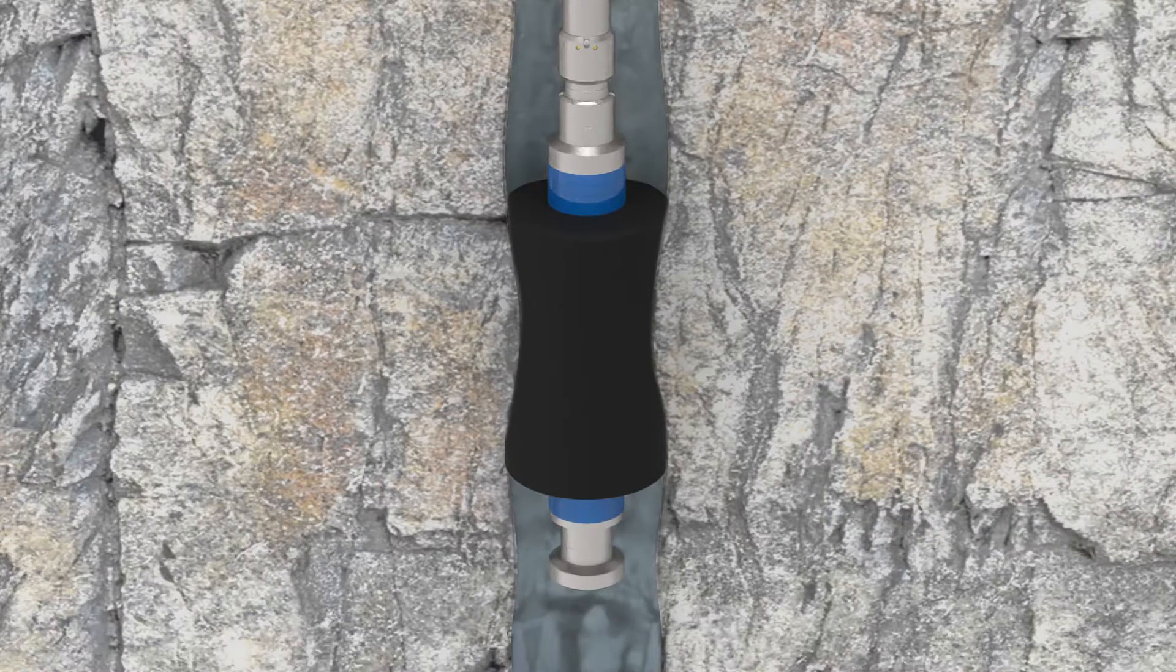Inflatable Packer element anchoring is achieved in open hole by the internal pressure enabling the creation of a seat within the specific geometry of the open hole itself.